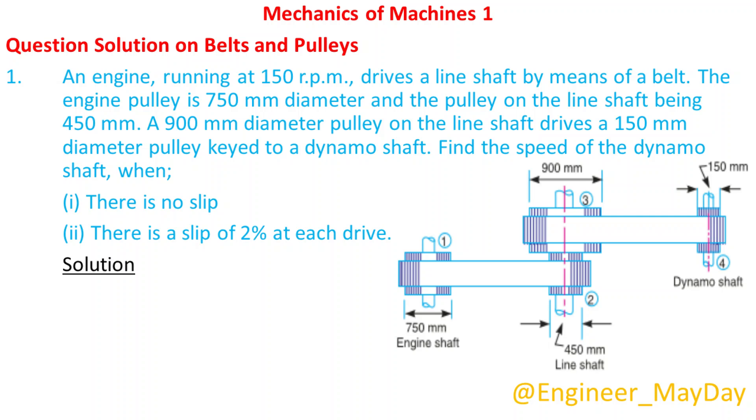Solution. Given N1 equals 150 rpm, D1 equals 750mm, D2 equals 450mm, D3 equals 900mm, D4 equals 150mm. Let N4 be equals speed of the dynamo shaft.